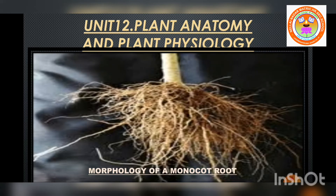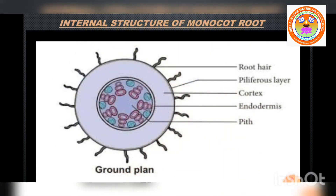Let me present the internal structure of monocot root — the anatomy of monocot root. The outermost layer is the piliferous layer or epiblema. Next to that is the cortex, and the innermost layer of the cortex is the endodermis. Then, inner to that, we can see the stele with pericycle, vascular bundle, and pith.